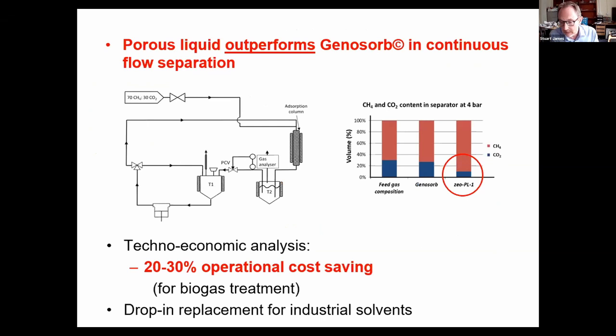In terms of the future of porous liquids, it's a young field developing very rapidly. In the context of climate change and sustainability, there is a huge opportunity to implement these as drop-in replacements for existing solvents — initially in small markets like biogas, and then addressing the big issue of blue hydrogen, which looks set to become part of the UK's strategy towards green hydrogen. Ethane and ethene separation is currently done cryogenically, estimated to consume about half a percent of the entire US energy demand — a huge opportunity if porous liquids could separate them more efficiently.